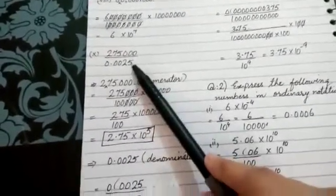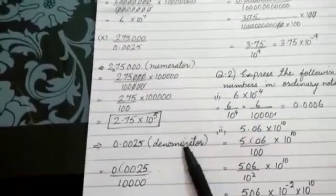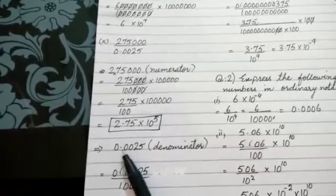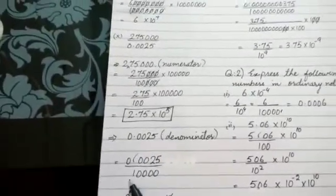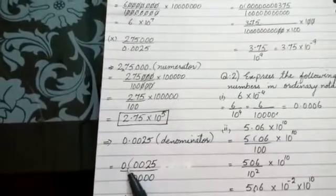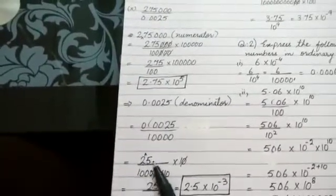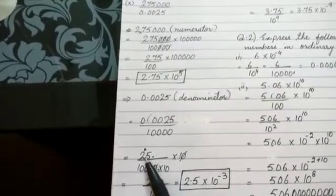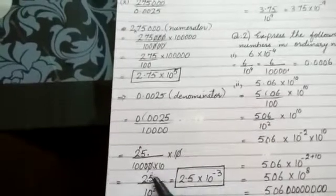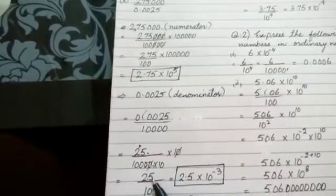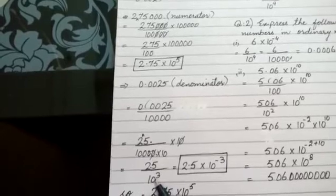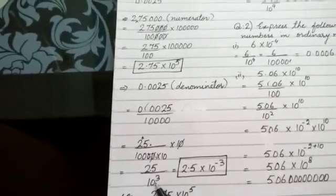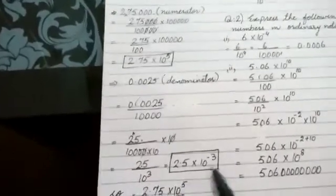Now we solve the denominator value 0.0525. Since it already has a point, we remove it — after the point there are 4 numbers, so we put 4 zeros in the denominator, giving 525/10000. Wait — actually 25/10000 after further simplification. We cross one digit, multiply and divide by 10; after cancellation, 25 divided by 10 gives 2.5, and 10³. Bringing 10³ to the numerator, power becomes negative: 2.5 × 10⁻³.